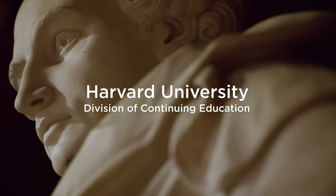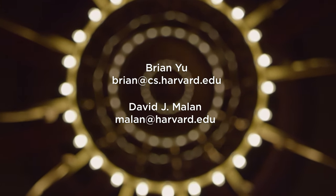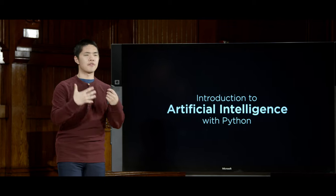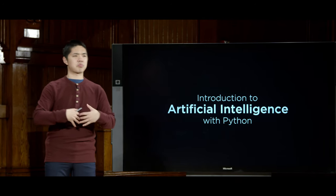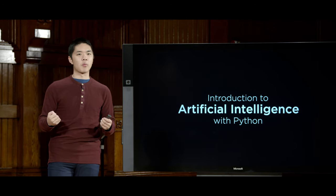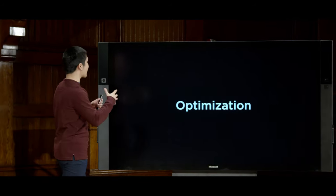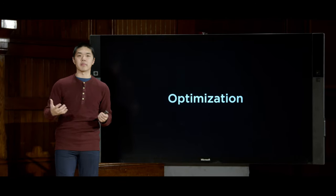Welcome back, everyone, to an introduction to artificial intelligence with Python. So far, we've taken a look at a couple of different types of problems: classical search problems, adversarial search, knowledge-based problems using logic and inference, and probabilistic models where we use knowledge about probabilities to draw conclusions.